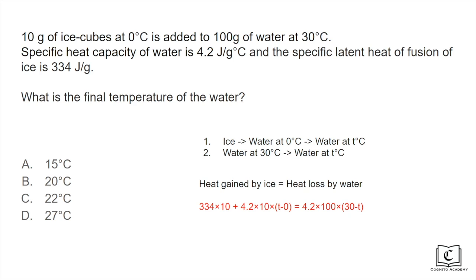Now expanding this out we get 3340 plus 42t equals to 12600 minus 420t and then rearranging this we get 462t equals to 9260 and then finally we get t equals to 20.0 to 3 significant figures so our answer is 20.0.